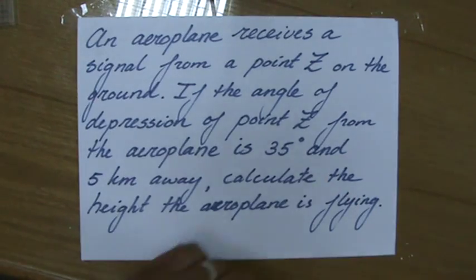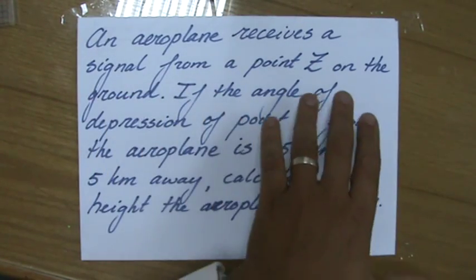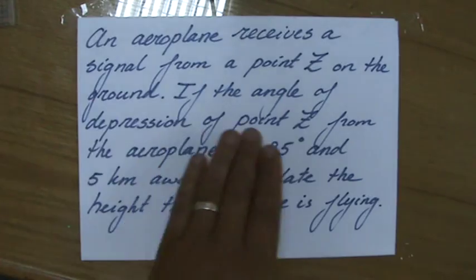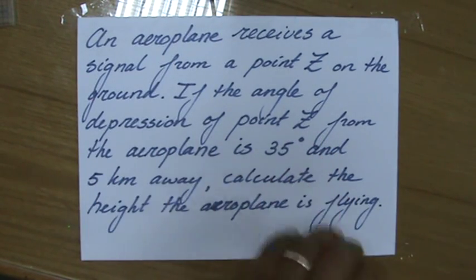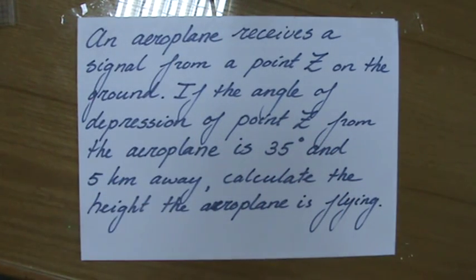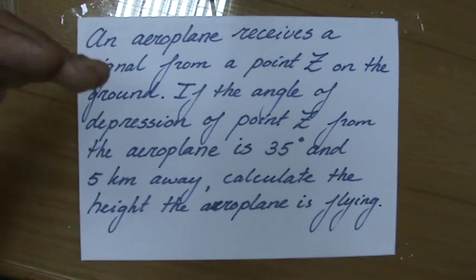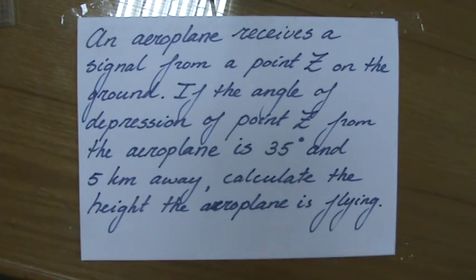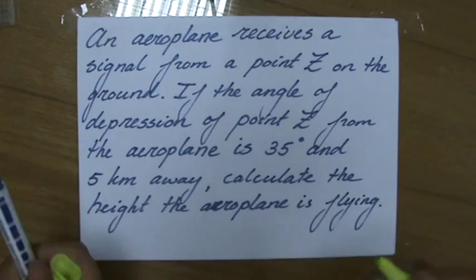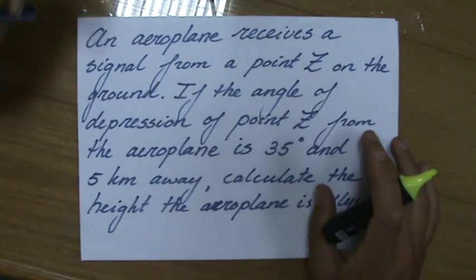An airplane receives a signal from a point Z on the ground. If the angle of depression of point Z from the airplane is 35 degrees and it's 5 kilometers away, calculate the height the airplane is flying. So quickly I'm going to underline the important information.